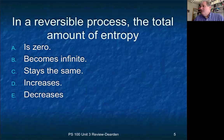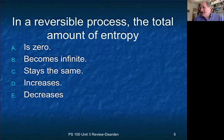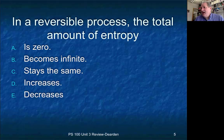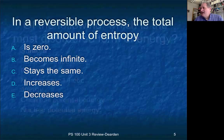This question asks what happens to the total amount of entropy in a reversible process. The best answer is C — the total amount of entropy stays the same. You may be tempted to answer A (that it's zero), but the second law of thermodynamics says entropy of the universe always increases in any real process. In a reversible process it doesn't increase — it just stays the same.